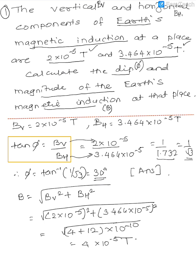So angle of dip, the first answer, is 30 degrees. Magnitude of magnetic induction, Earth's magnetic induction B, is under root of Bv square plus Bh square. When solved, we will get 4 times 10 raised to minus 5 tesla. So this answer is 4 times 10 raised to minus 5 tesla. This is how we solve a numerical on Earth's magnetic field.